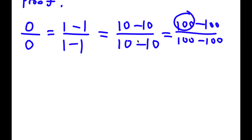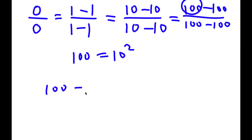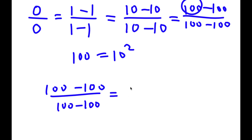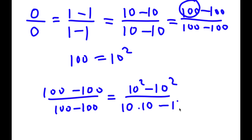Now, 100 is the same thing as 10 squared. So 100 minus 100 over 100 minus 100 — I'm going to write this as 10 squared minus 10 squared over. For the bottom, I'm not going to write 10 squared minus 10 squared; instead I'm going to write 10 times 10 minus 10 times 10, which is allowed, since 10 times 10 is the same thing as 10 squared.